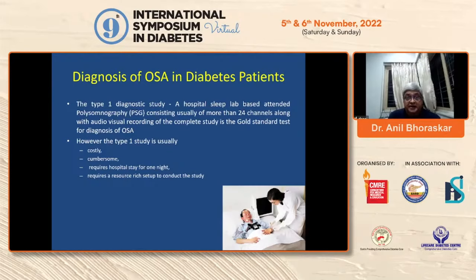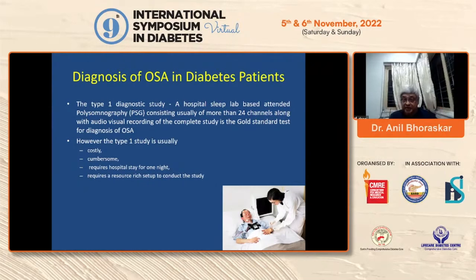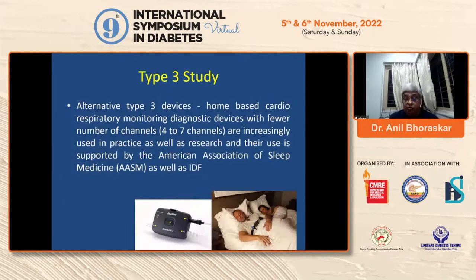For diagnosis, the Type 1 study — polysomnography — is usually costly and cumbersome, requires one night of hospital stay, and a rich resource setup. The best alternative is a home-based sleep apnea study using a Type 3 device: a home-based respiratory monitoring diagnostic device with 4 to 7 channels, supported by the American Academy of Sleep Medicine. You simply put on an oxygen saturation meter and chest leads — a very simple test that can be done at home.